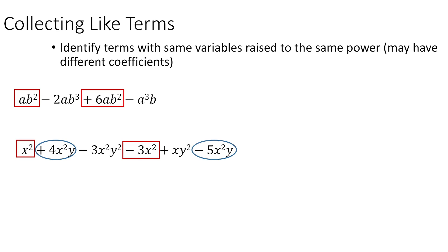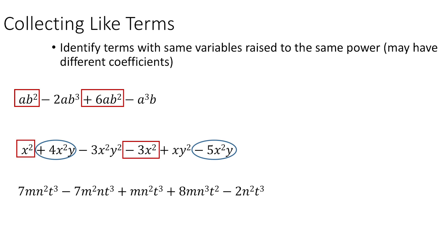Note that the order of the variables could be different. For example, if you have an x squared y term and then a y x squared term, those are still like terms because the order of multiplication can be rearranged. Looking at mn squared t cubed, m squared n t cubed, mn squared t cubed, mn cubed t squared, and n squared t cubed — there's only one set of like terms: mn squared t cubed. The others are all different combinations of variables.